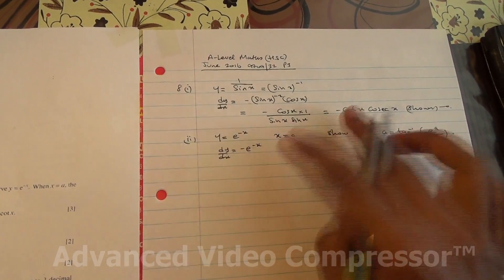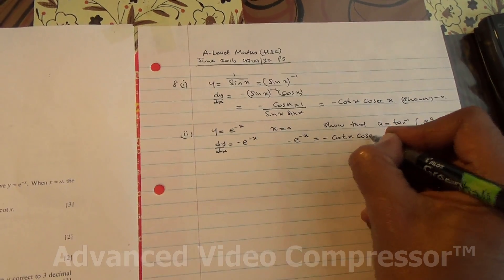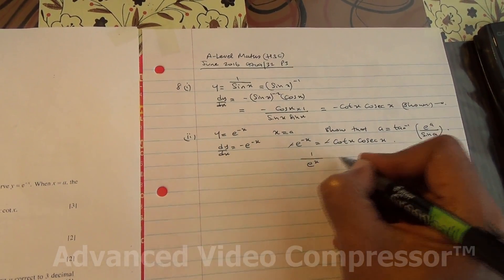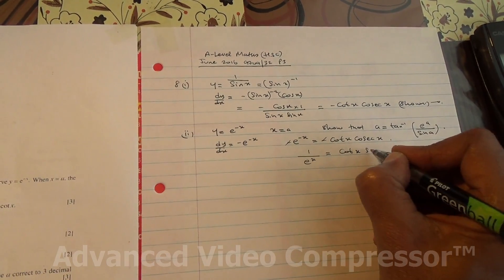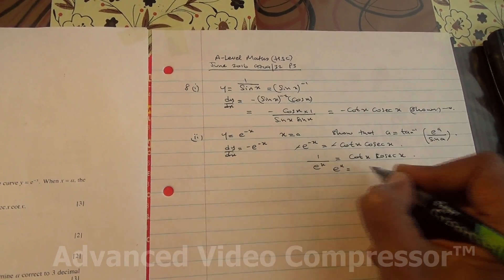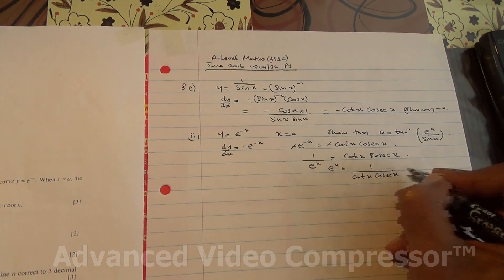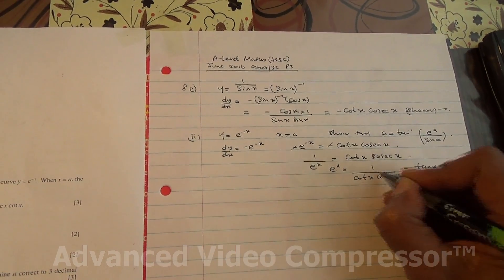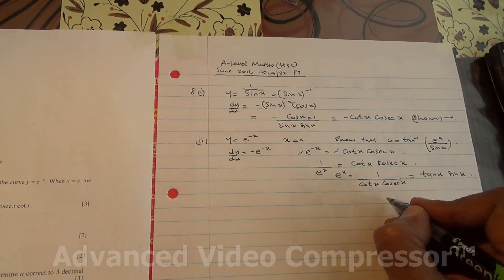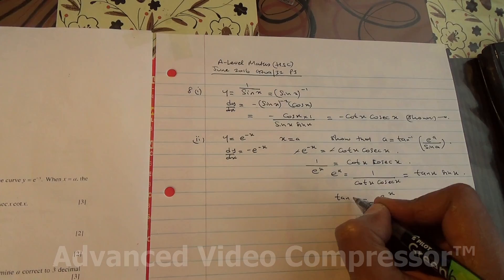So these two are equal. Therefore, negative e to the negative x equals negative cot(x) cosec(x). The negatives cancel. We've got 1 over e to the x equals cot(x) cosec(x). Inverting both sides, e to the x equals 1 over cot(x) cosec(x). Now, 1 over cot(x) is tan(x), and 1 over cosec(x) is sin(x). So e to the x divided by sin(x) equals tan(x).